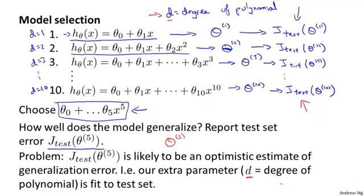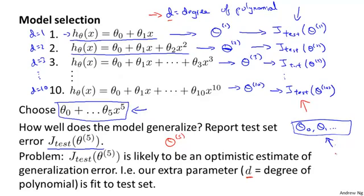To reiterate: just as fitting theta parameters to the training set means they're likely to do well on the training set even if they don't generalize, here we fit the parameter d to the test set. By having fit that parameter to the test set, the performance on the test set may not be a fair estimate of how well the hypothesis will do on examples it hasn't seen before.